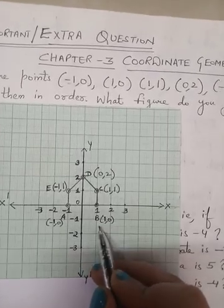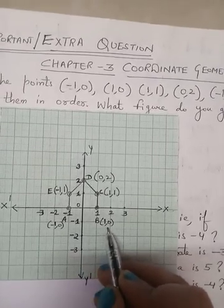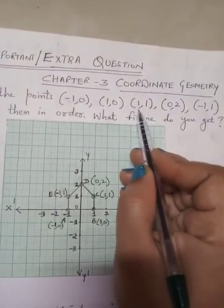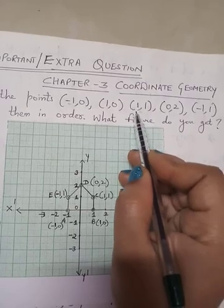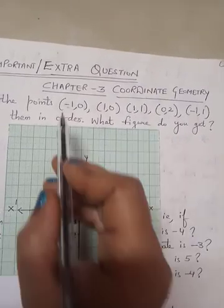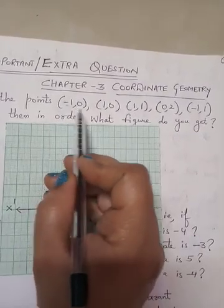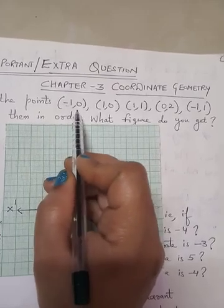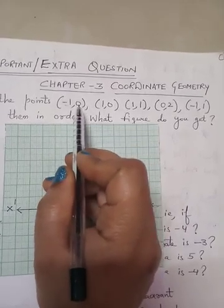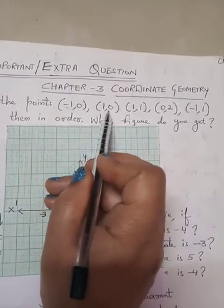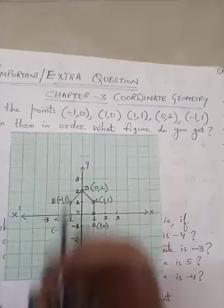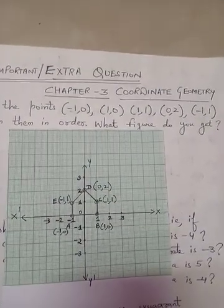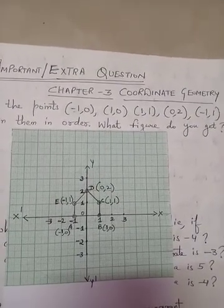For (1, 1), both coordinates are positive, so it lies in the first quadrant. Points are not lying in any quadrant when one of their coordinates is 0 — they lie on the x-axis or y-axis depending upon which coordinate is 0.